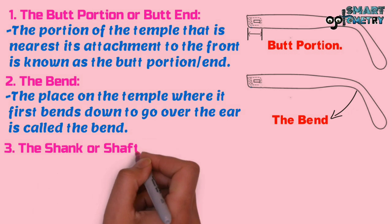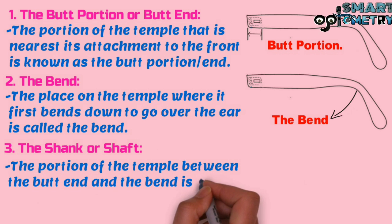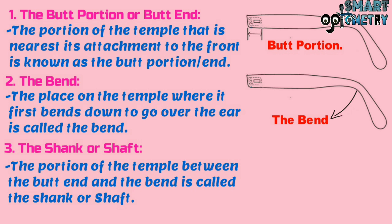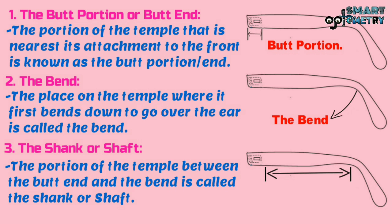Three, the shank or shaft. The portion of the temple between the butt end and the bend is called the shank or shaft. Here in this figure you can see the shaft.